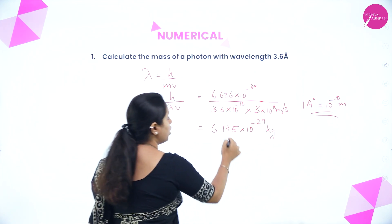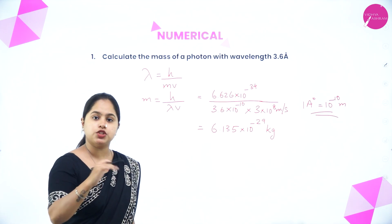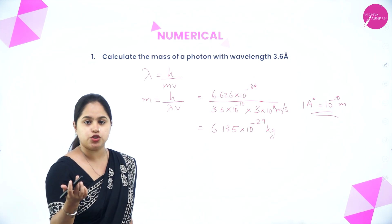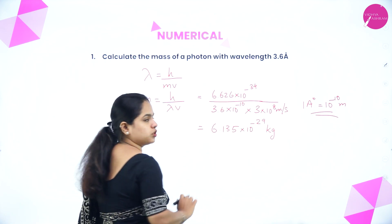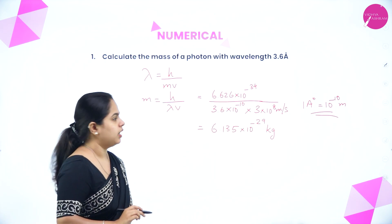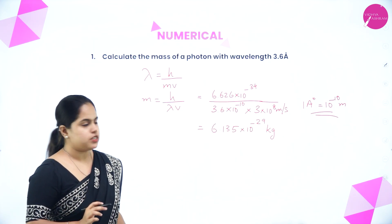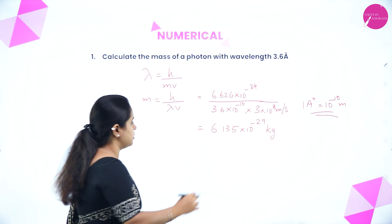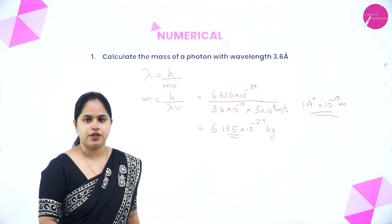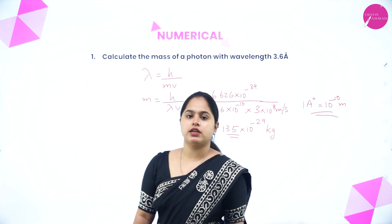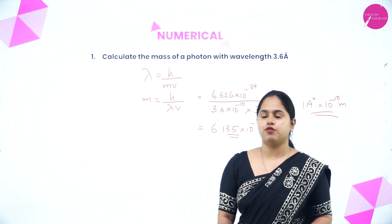The wavelength must be converted from angstrom to meters: 3.6 × 10⁻¹⁰, and velocity is 3 × 10⁸. Just substitute into the equation and that gives the answer. That is about de Broglie's wavelength — I hope the equation is clear.